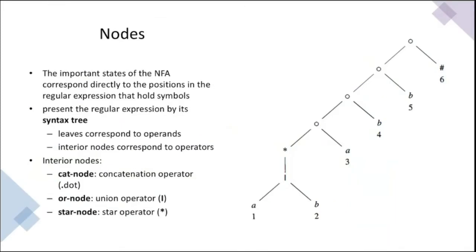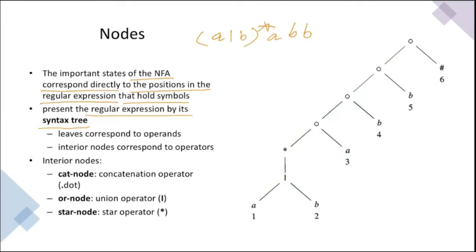Now the concept of nodes: the important states of the NFA correspond directly to the positions in the regular expression that hold symbols. We represent the regular expression by its syntax tree. Our regular expression is (A|B)*ABB. We assign position numbers to each symbol: A gets position 1, B gets position 2, A gets position 3, B gets position 4, B gets position 5.